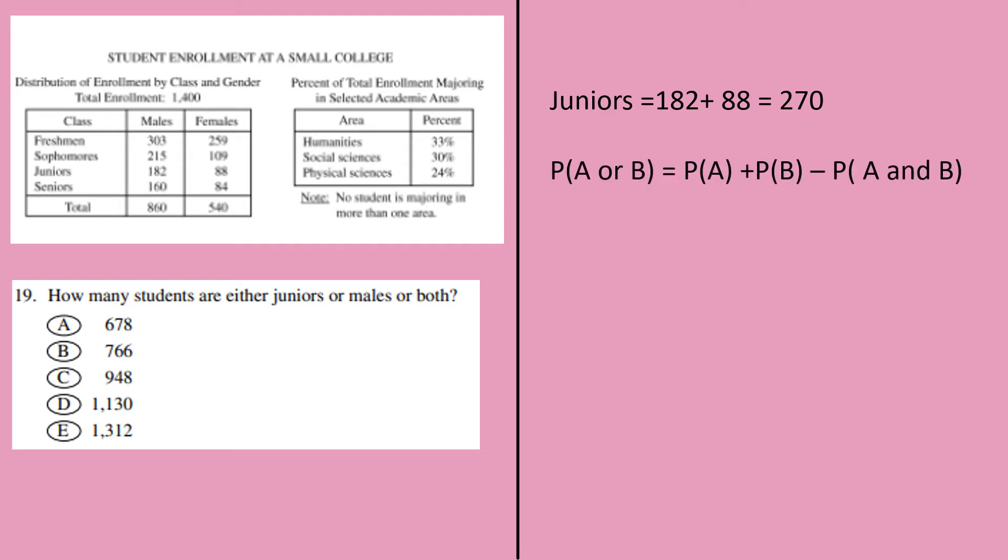If you want to find the probability of A or B, there is something common, then P of A plus P of B minus P of A and B will be the probability of A or B. Now since we have some students who are juniors as well as males, if I'm trying to find probability of juniors or males or both, then probability of complete males is 860.